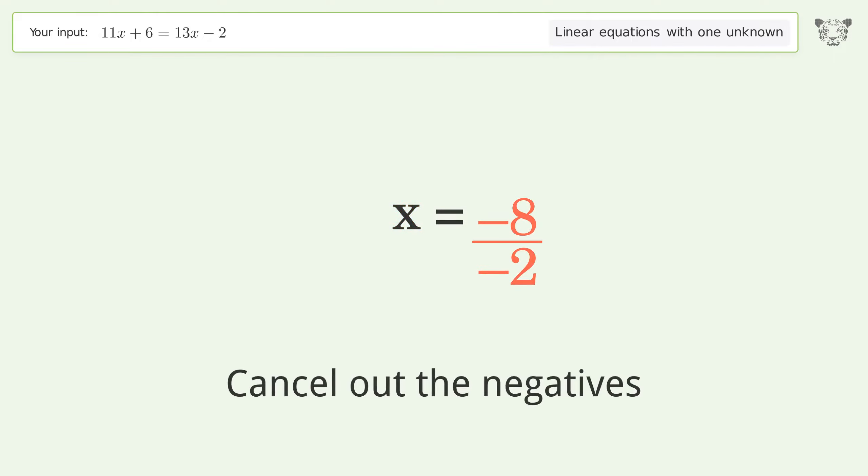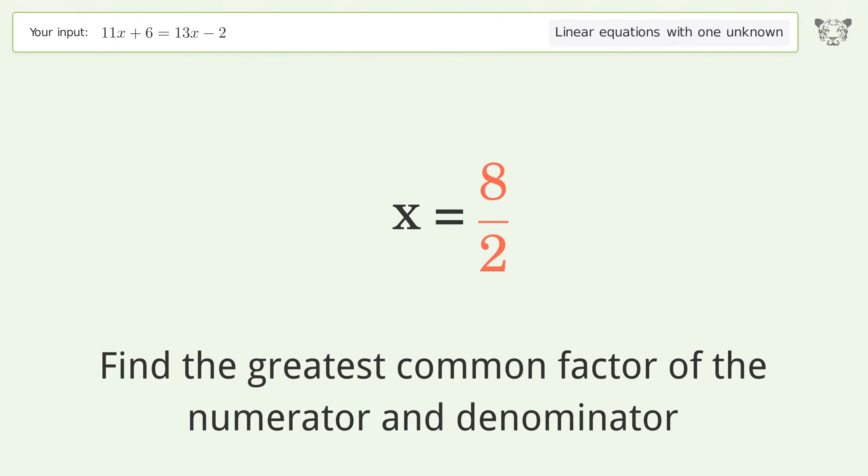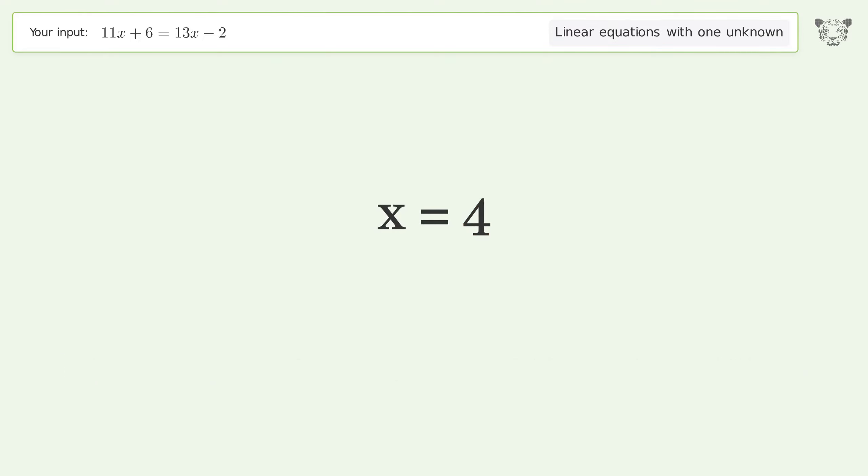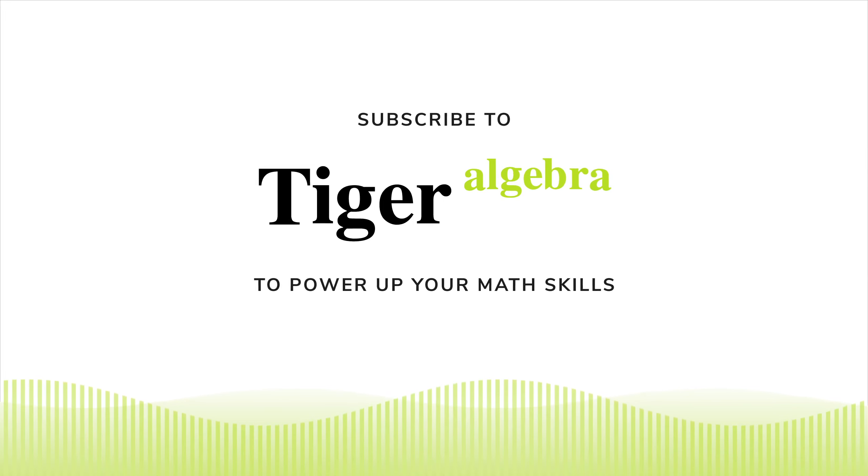Cancel out the negatives. Find the greatest common factor of the numerator and denominator. Factor out and cancel the greatest common factor. And so the final result is x equals 4.